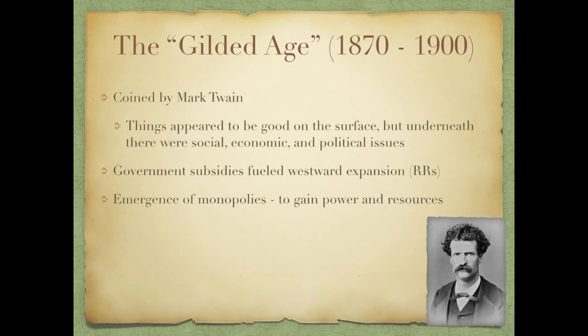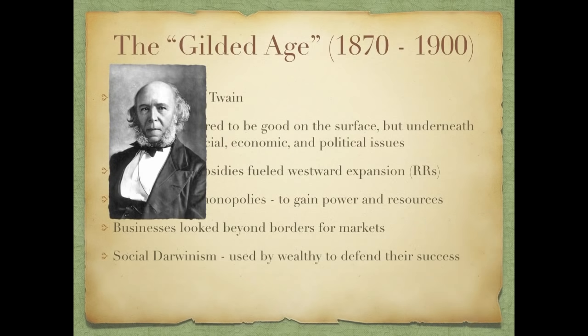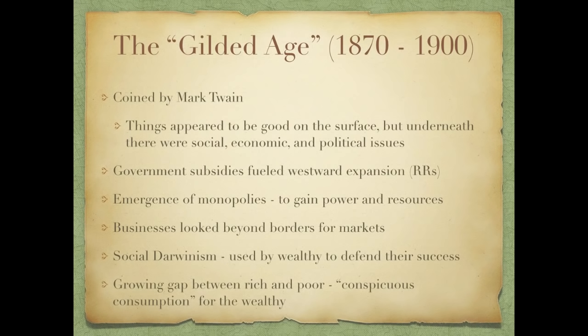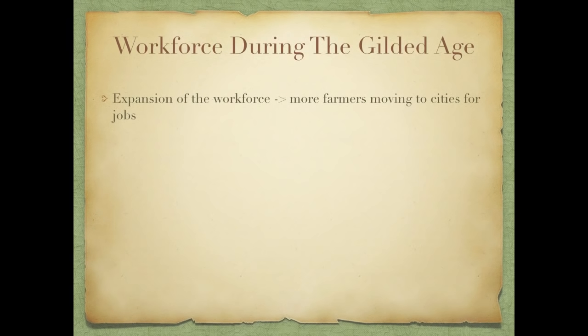During this time, government subsidies fueled westward expansion, especially for railroads. We see the emergence of monopolies — the purpose being for businesses to gain power and resources — and businesses began to look beyond American borders for markets, especially overseas toward Asia. Social Darwinism was an idea used by the wealthy to defend their success: the survival of the fittest. If you were rich, you deserved it; if you were poor, you just needed to work harder. We also see a growing gap between rich and poor, and what is called conspicuous consumption for the wealthy.